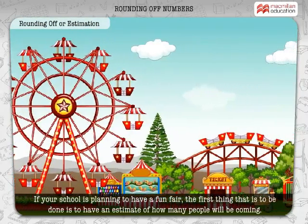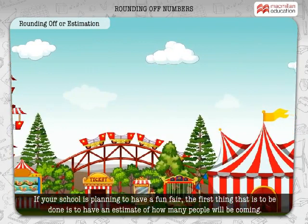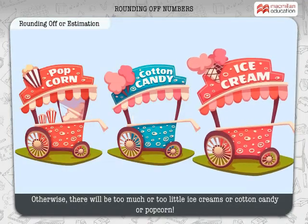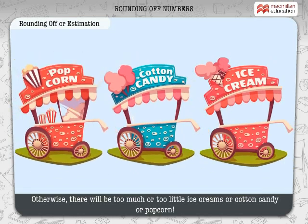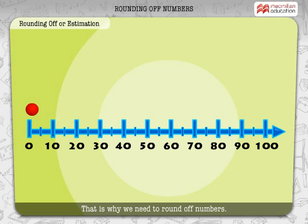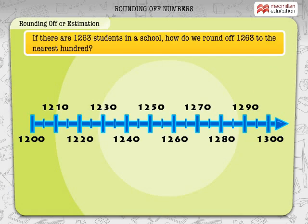If your school is planning to have a fun fair, the first thing to be done is to have an estimate of how many people will be coming. Otherwise, there will be too much or too little ice cream, cotton candy, or popcorn. The exact number is not required, but somewhere close to the number. That is why we need to round off numbers. When the number is large, we round off to the nearest 100. So, if there are 1263 students in a school, how do we round off 1263 to the nearest 100?